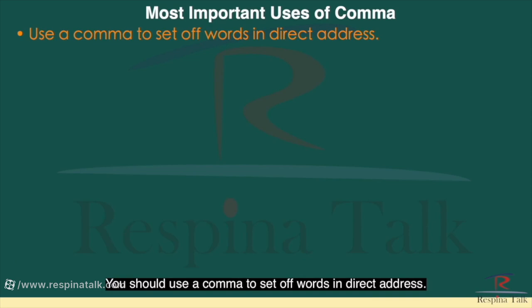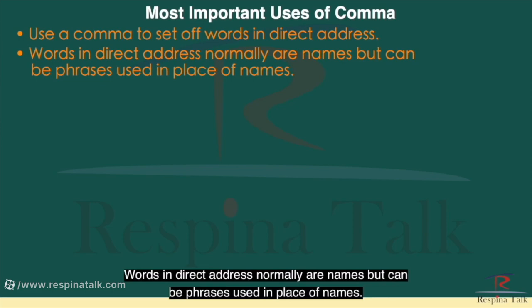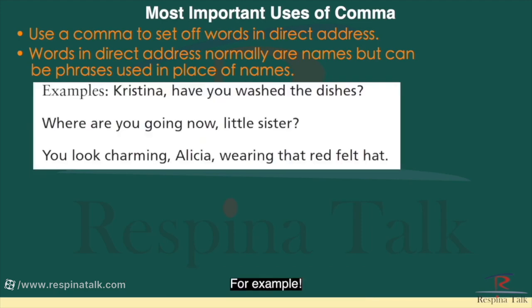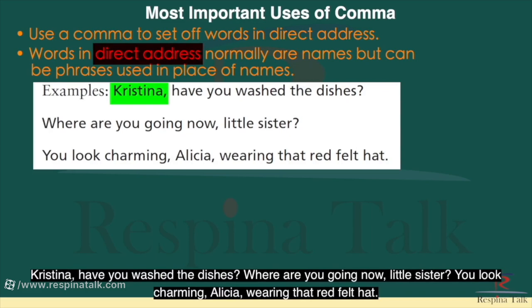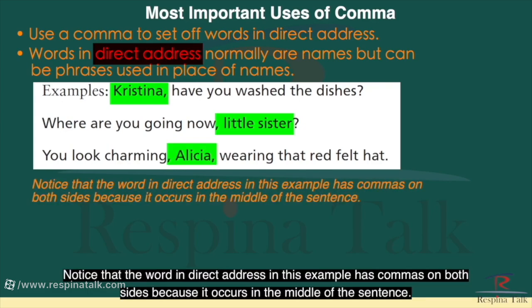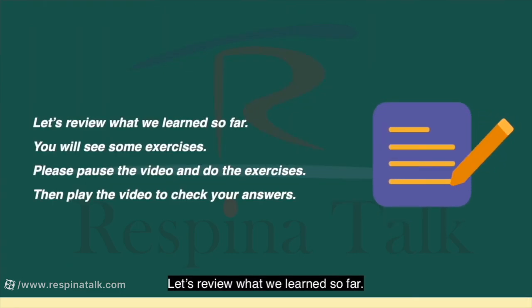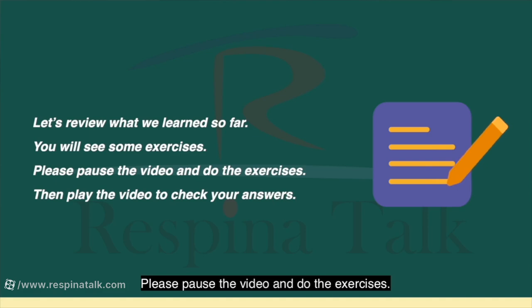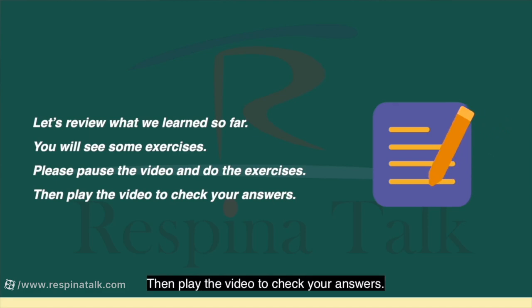You should use a comma to set off words in direct address. Words in direct address are normally names but can be phrases used in place of names. For example: 'Christina, have you washed the dishes?' 'Where are you going now, little sister?' 'You look charming, Alicia, wearing that red felt hat.' Notice that the word in direct address in the last example has commas on both sides because it occurs in the middle of the sentence. Let's review what we learned so far. Please pause the video and do the exercises, then play the video to check your answers.